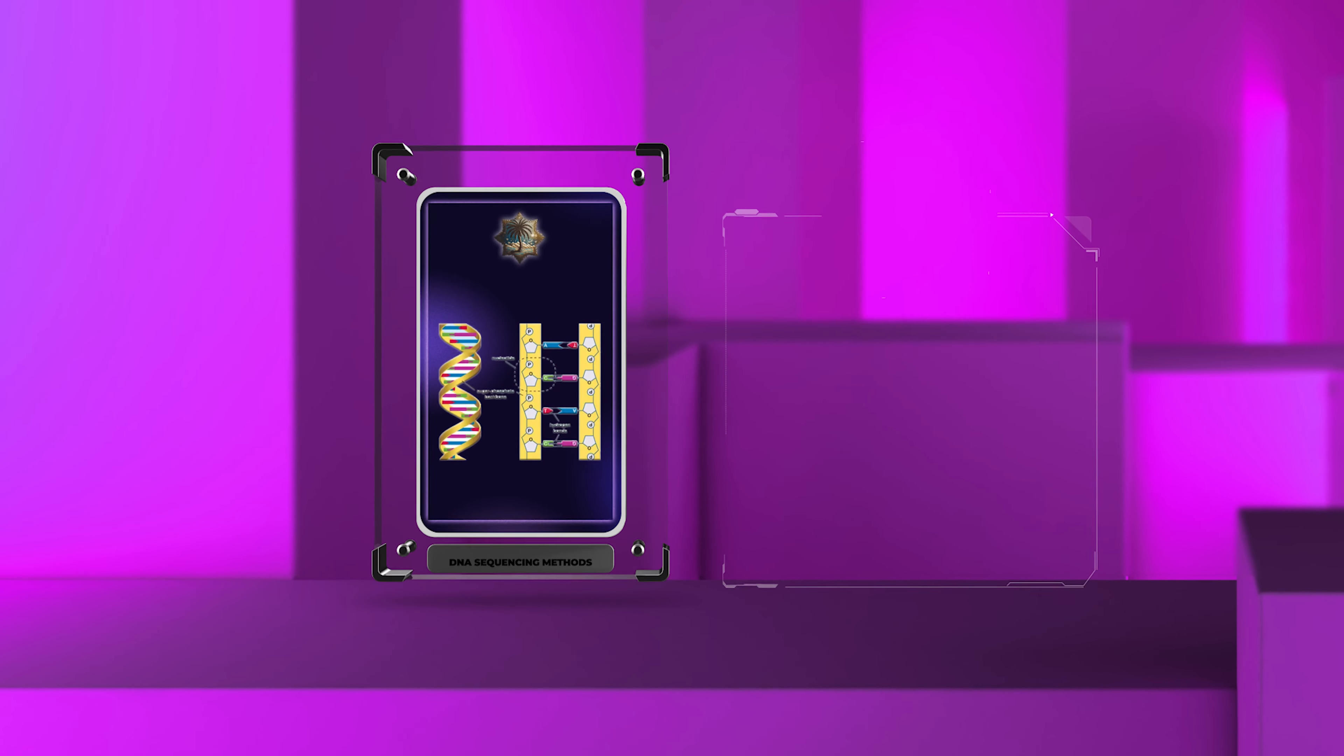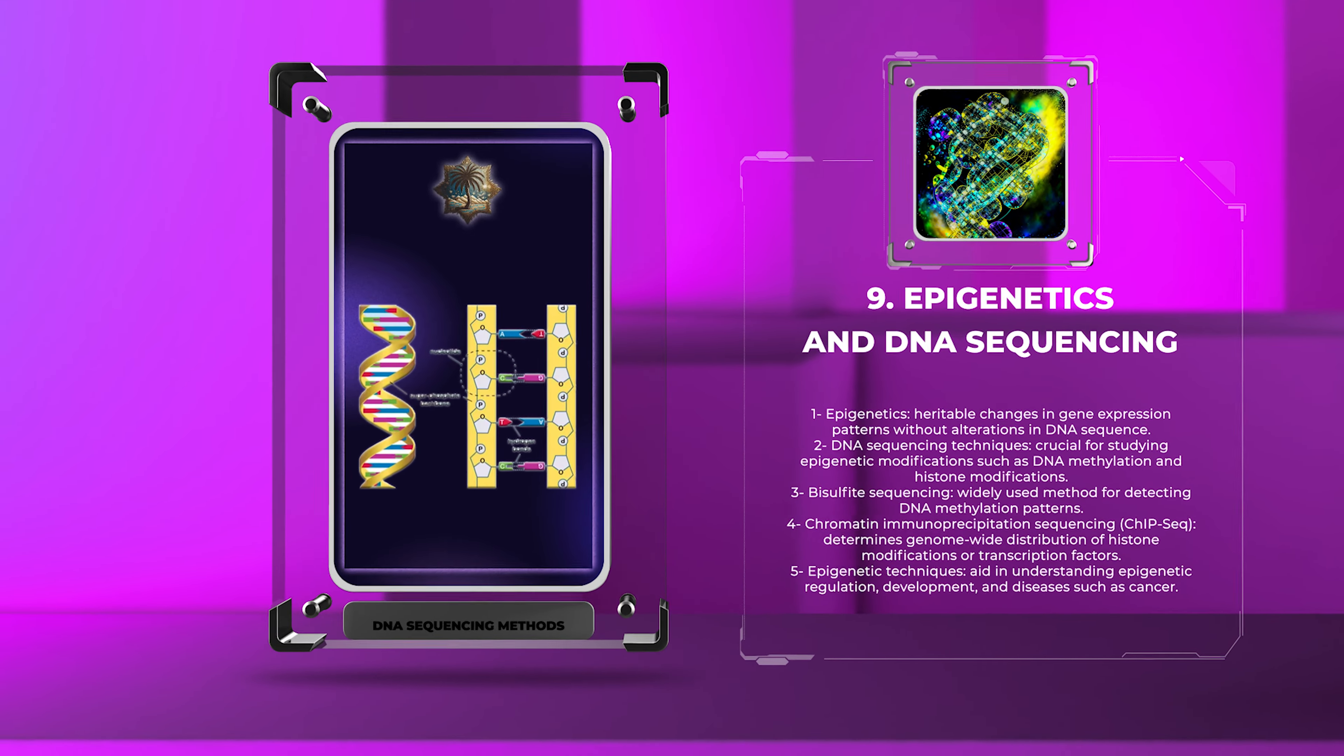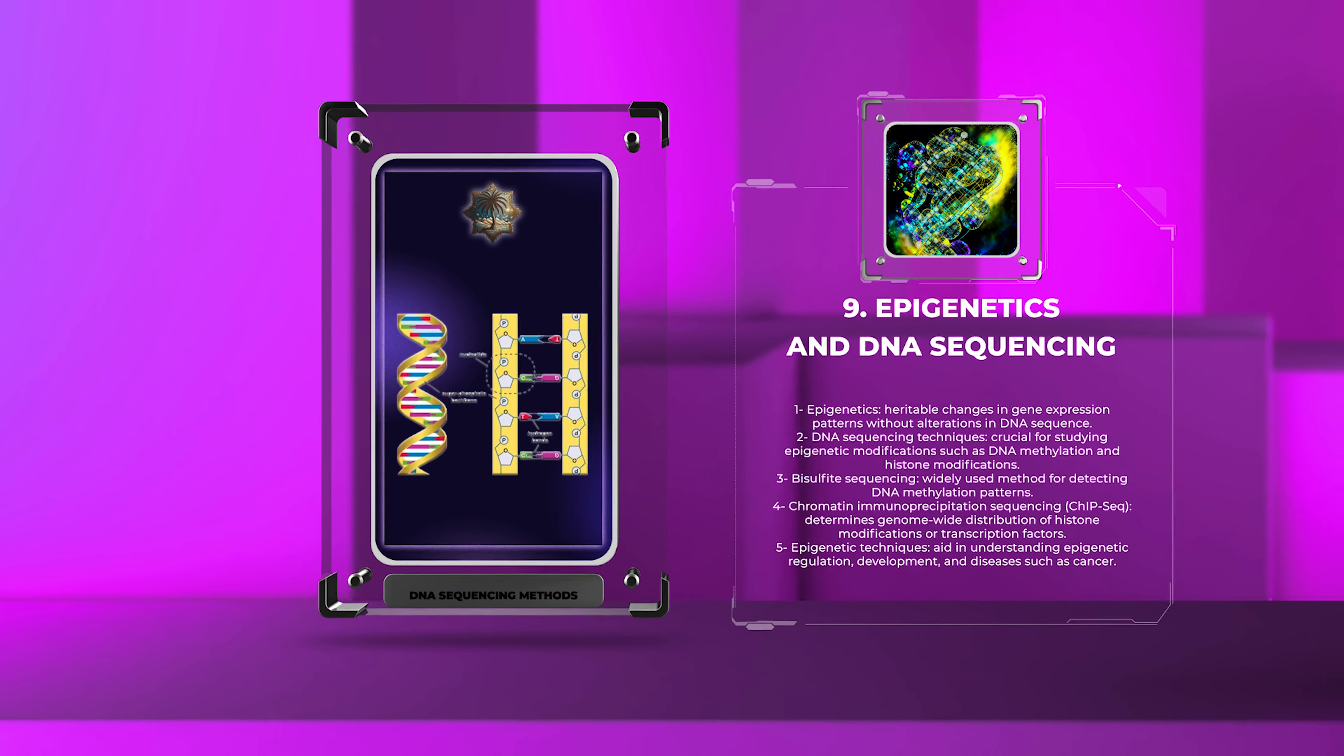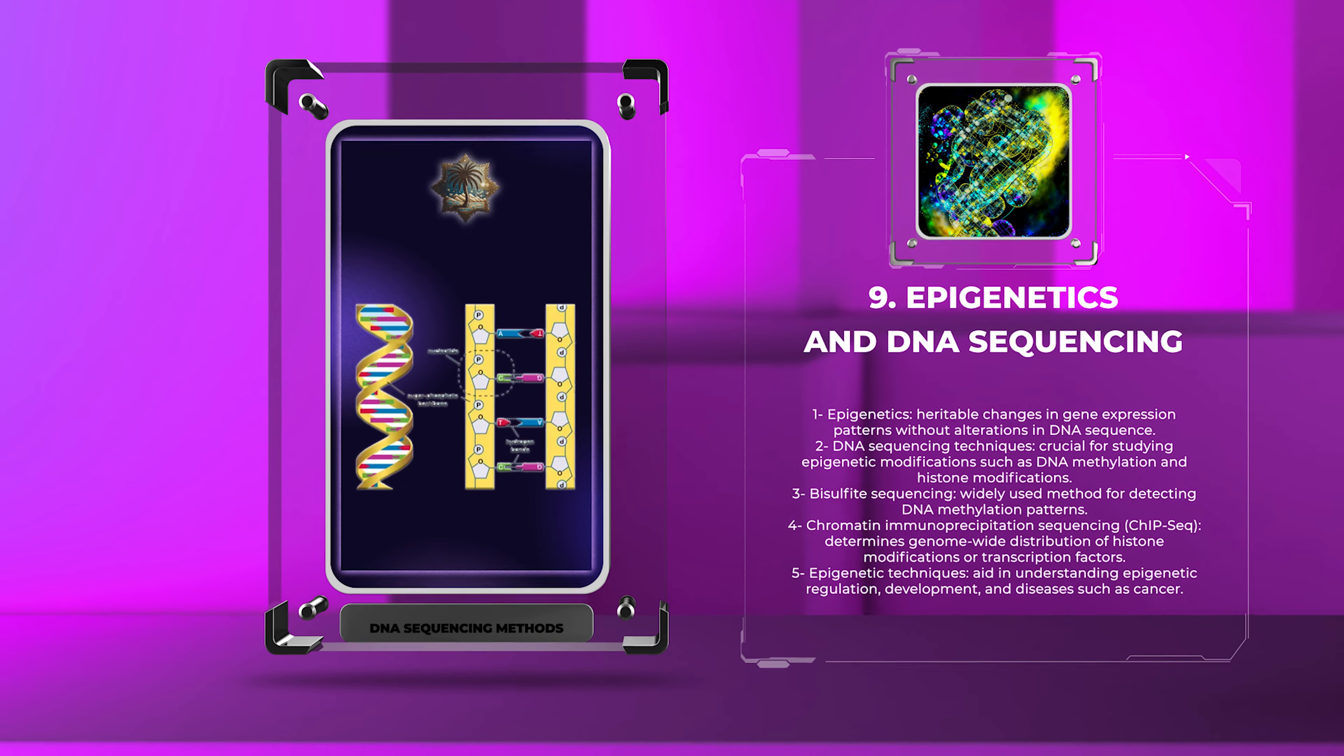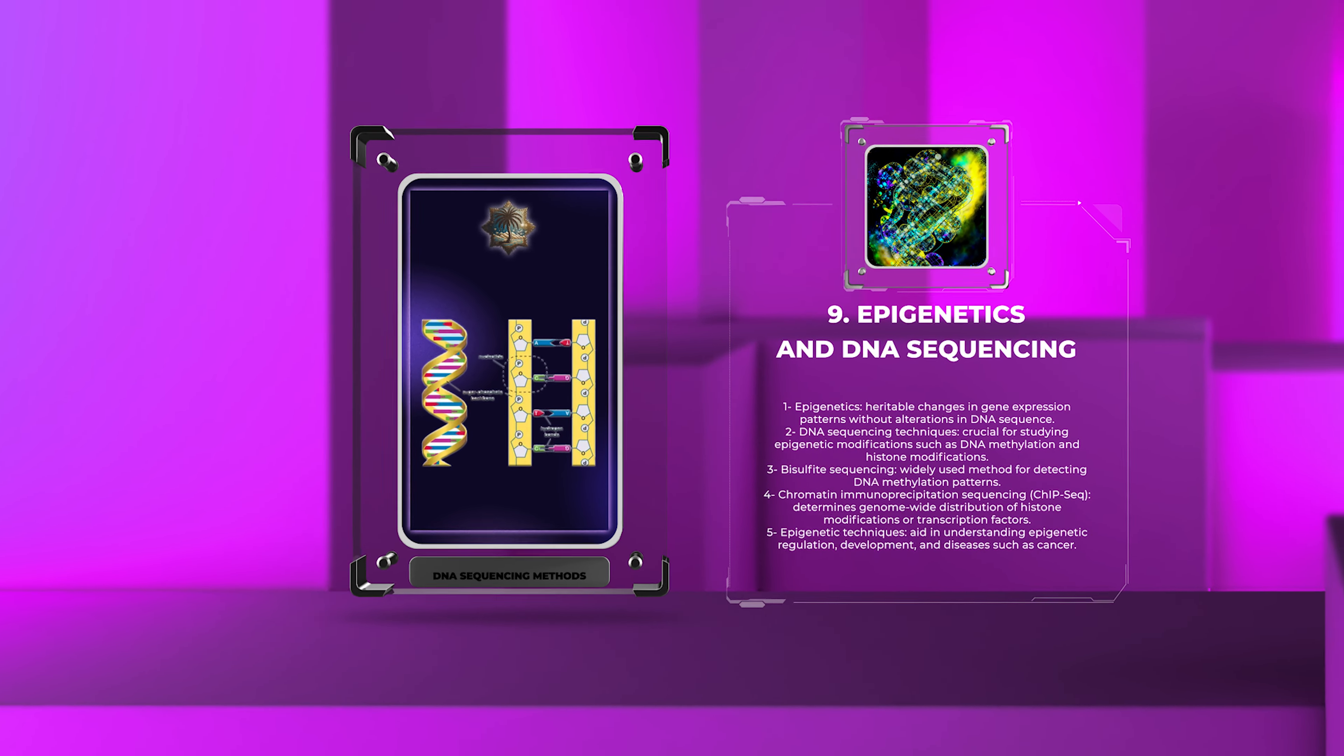Epigenetics refers to heritable changes in gene expression patterns that do not involve alterations in the DNA sequence itself. DNA sequencing techniques play a crucial role in studying epigenetic modifications, such as DNA methylation and histone modifications. Bisulfite sequencing is a widely used method to detect DNA methylation patterns, allowing the identification of methylated cytosines. Chromatin immunoprecipitation sequencing, ChIP-seq, determines the genome-wide distribution of histone modifications or transcription factors. These techniques aid in understanding epigenetic regulation, development, and diseases such as cancer.